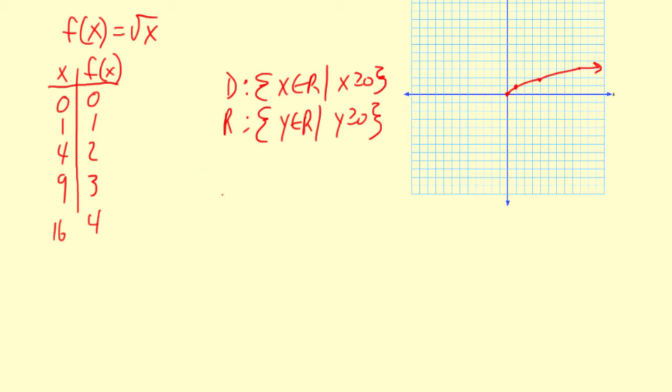So the general form of the square root function is this: f of x equals a times the square root of bx minus h, then plus k.